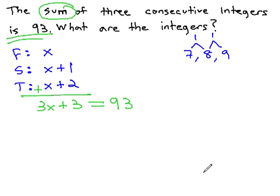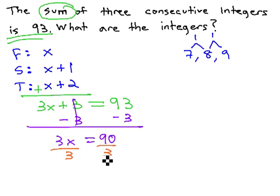This means 3x plus 3 equals 93, and we now have an equation we can quickly solve by subtracting 3 from both sides to get 3x equals 90. And finally, dividing both sides by 3 to get x equals 30.